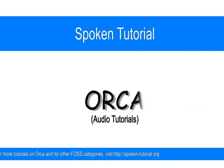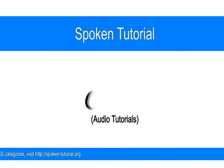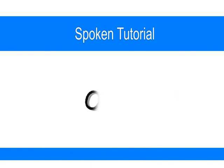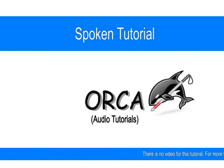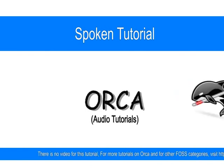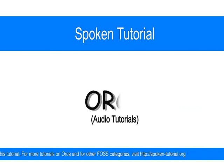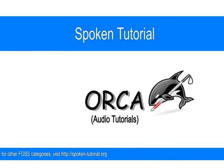Now we type the second line: 'Orca is in the system by default.' Orca echoes each character as typed. Hit Enter for another line. Orca reads back: 'Orca will in the system by default.'